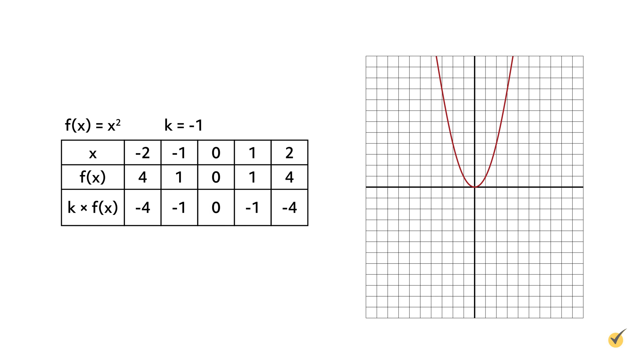Another way to manipulate functions is by reflecting them across the x or y axis. Reflections can be thought of as flipping the graph of a function over an axis. When reflected, the new graph is congruent to the original. Let's reflect the function f(x) equals x squared across the x-axis. Using the formula k times f(x), multiply the function by a number k that is less than 0 — in this example, k equals negative 1. The original function, shown in red, is reflected across the x-axis by multiplying the y-coordinates by negative 1. The reflection is shown in green. If the coordinate plane were folded along the x-axis, the two functions would align.